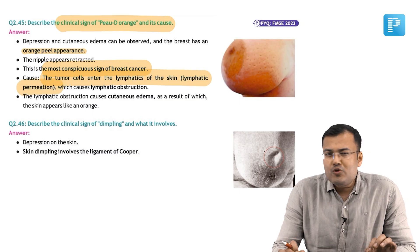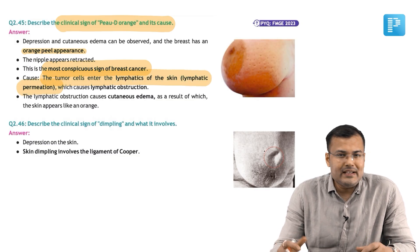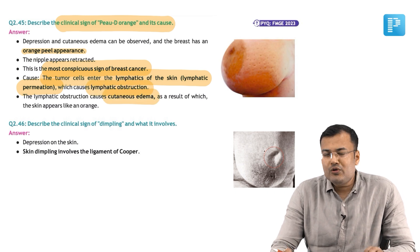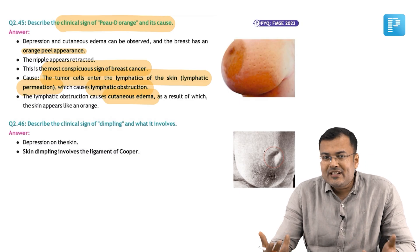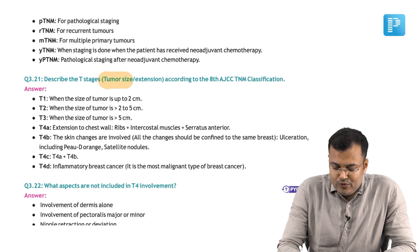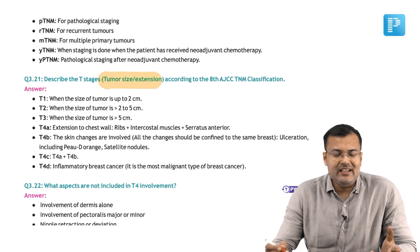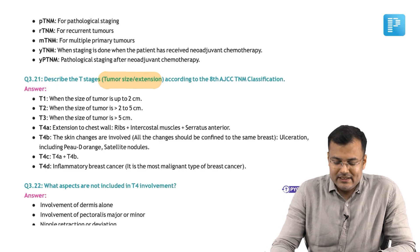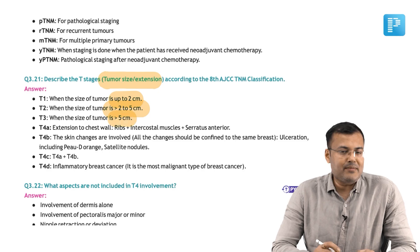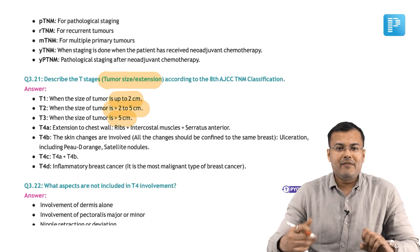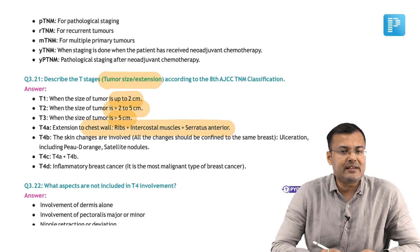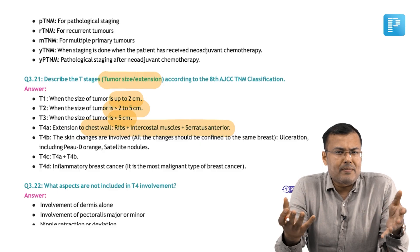The tumor cells enter the lymphatics, causing lymphatic obstruction, and because of that there is cutaneous edema. Now, see the staging. Describe the stages and tumor size extension according to the 8th AJCC TNM classification. T1: size up to 2 cm. T2: more than 2 to 5 cm. T3: more than 5 cm. T4A: extension to the chest wall, which is formed by ribs, intercostal muscles and serratus anterior. Pectoralis major and minor is not part of the chest wall.